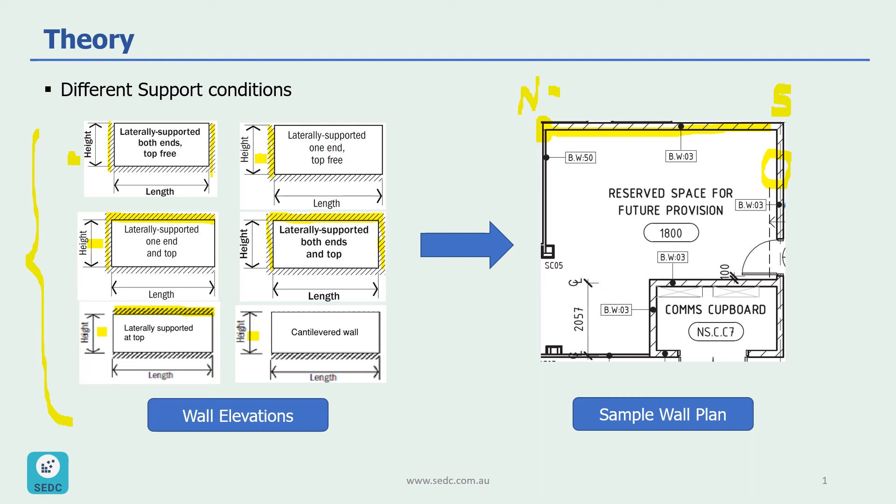So I write NS, means no support at this end. So depending on whether we have support at the top or not, we might have these two support conditions. We might have this support condition if there is no support at the top, or we might have this support condition if we have support at the top.